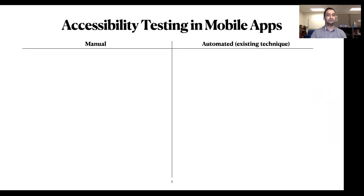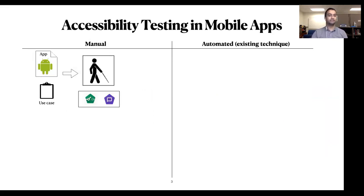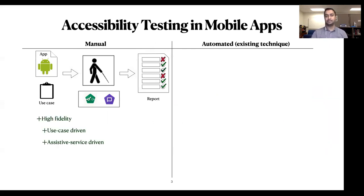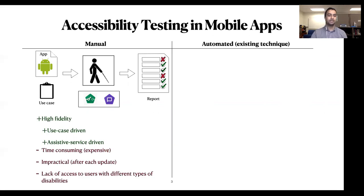Testing can be done either manually or automatically. In manual testing, given an app, a user — preferably with a disability — performs some use cases using an assistive service and reports existing issues. This technique is accurate since the use cases are evaluated using the actual way disabled users interact with the device. However, manual testing is time-consuming, impractical, and usually developers do not have access to users with a variety of disabilities.